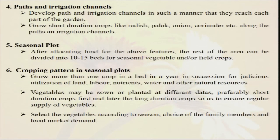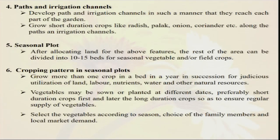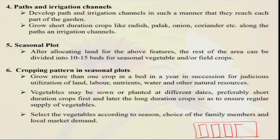Organic manures — different types of compost: there is panchagavya from five cow products, jeevamruta, seaweed extract, bone meal, and rock phosphate — all can be used in your composting system. Path and irrigation channels are also important. When you have some room in your organic kitchen garden, you can make a small path so that in the evening or morning you can walk inside. You can make some irrigation channels if the area is larger. You can also put a small drip irrigation system or a sprinkler irrigation system. For the seasonal plant area, you can make different types of beds — one plot for potato, one for cabbage, one for coriander, one for amaranthus — and immediately rotate them interchangeably.